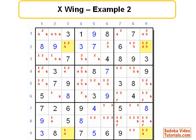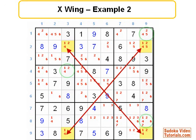So, based on the X wing rule, we can eliminate 4s from all the other cells in columns 3 and 9 as indicated by the green rings.